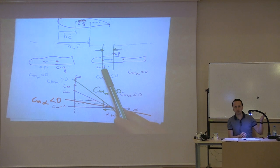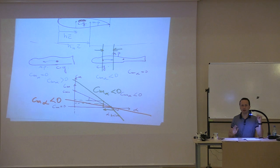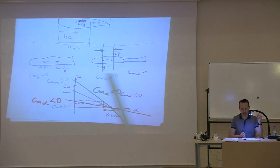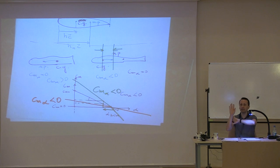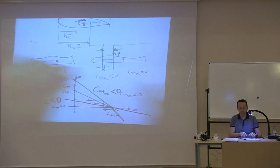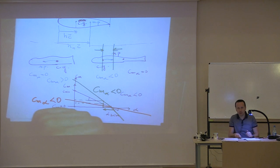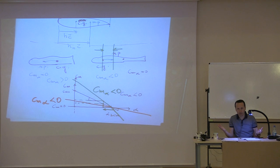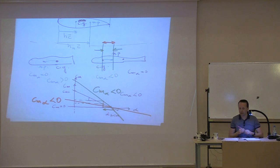The CG must be in the front for static stability. Speaking of dynamic stability — how fast will it come back, will it oscillate — this distance becomes important. If the distance is too large, you will have a lot of restoring moment from a disturbance in alpha. If the distance is small, the restoring moment will be small. If the CG moves to the back, you suddenly have an unstable airplane. Therefore this distance is an important distance in aircraft design.